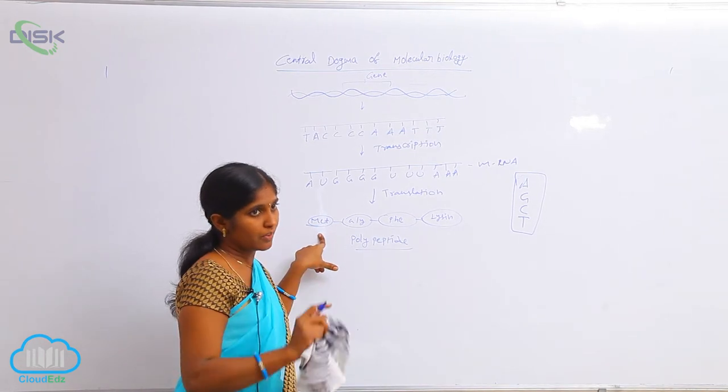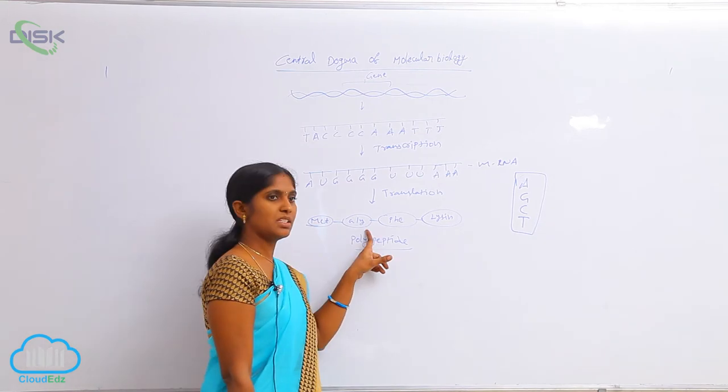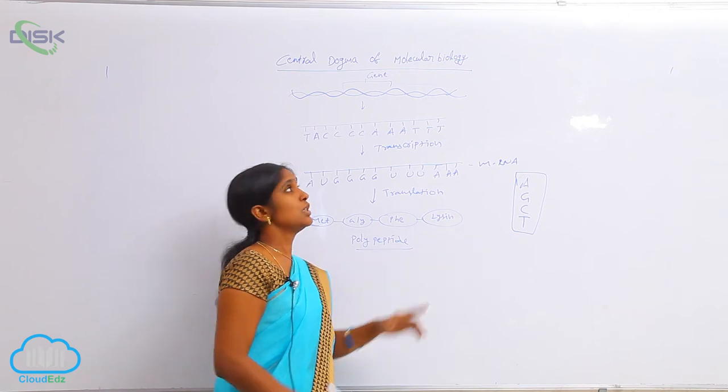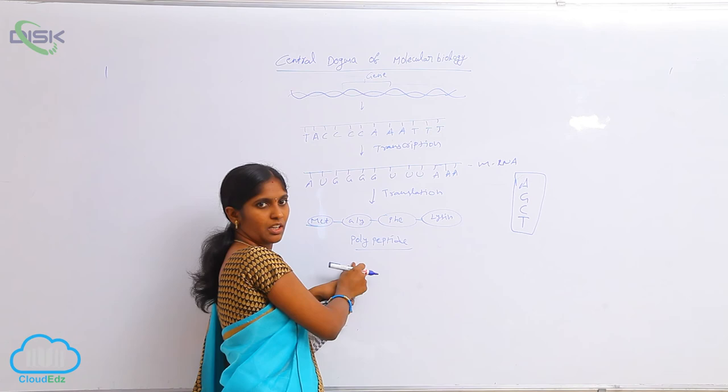So polymers of amino acids, proteins, are formed here. So that is methionine, glycine, phenylalanine, lysine. So from DNA to proteins, the genetic information is carried out.